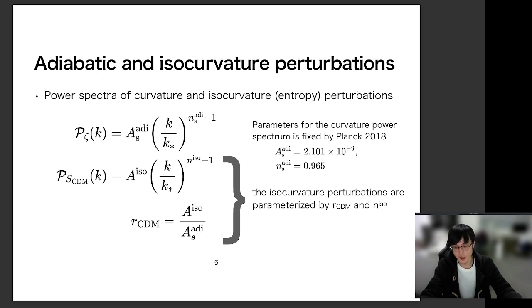for the adiabatic perturbations, such as A_s and n_s. And these are given by the latest Planck results. And we consider the parameters for the isocurvature perturbations as free parameters. And for easy comparison between the adiabatic and isocurvature perturbations, we introduce the RCDM parameter. So this parameter is the ratio between the amplitude of the isocurvature power spectrum and the curvature power spectrum.